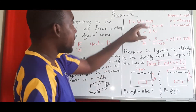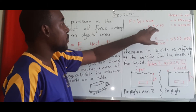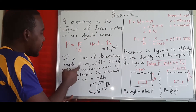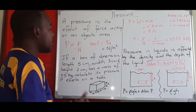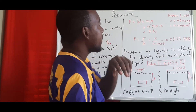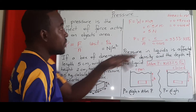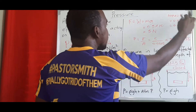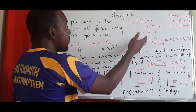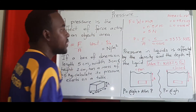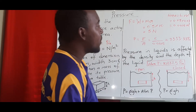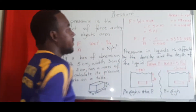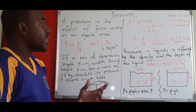Since we're given mass, we find the weight (force) using W = mg: 0.5 × 10 = 5 Newtons. For area, we convert: 5 cm ÷ 100 = 0.05 m, and 3 cm ÷ 100 = 0.03 m; multiplied together gives 0.0015 m². Pressure = force ÷ area = 5 ÷ 0.0015 = 3333.33 Pascals. That's how we find pressure for a solid object.